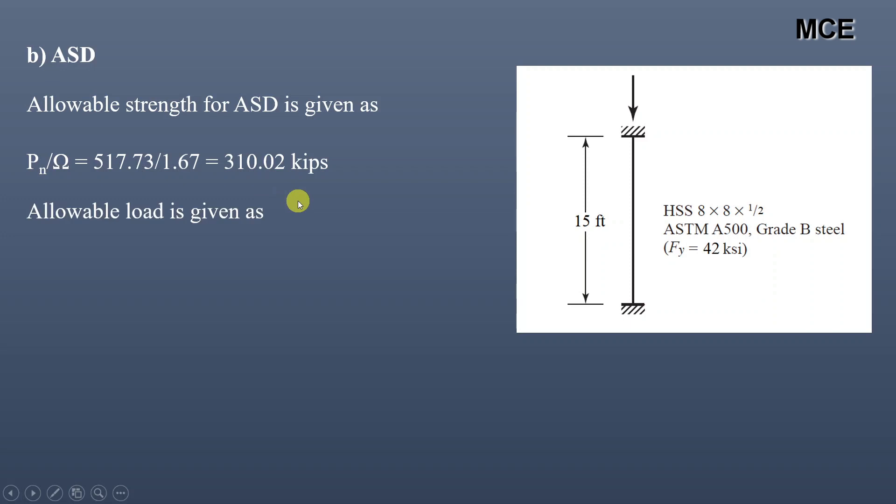Allowable load is given as Pa is equal to dead load plus live load, that is 175 plus 100, which equals 275 kips. We can see that the allowable strength is greater than the allowable load, so column is adequate to support the load.